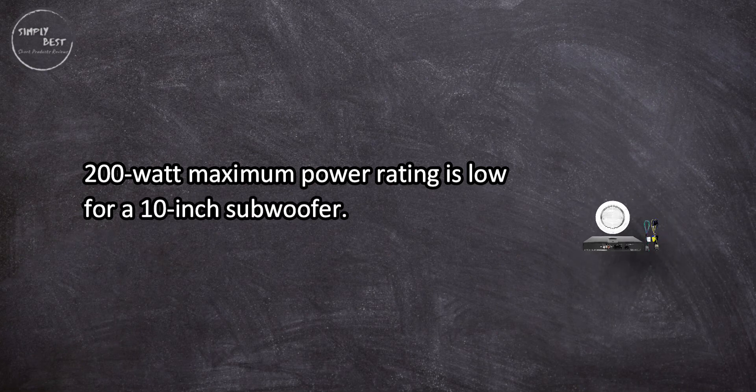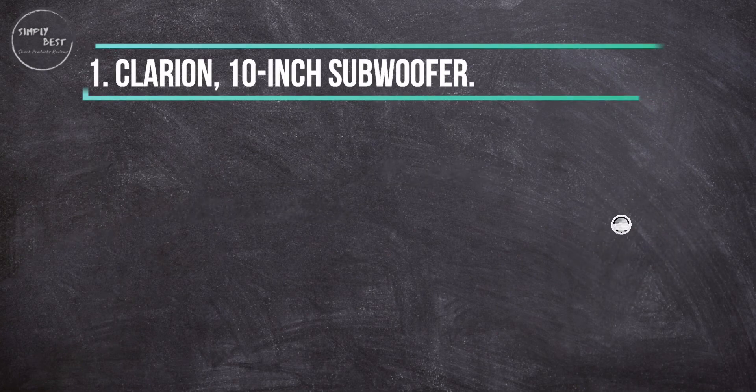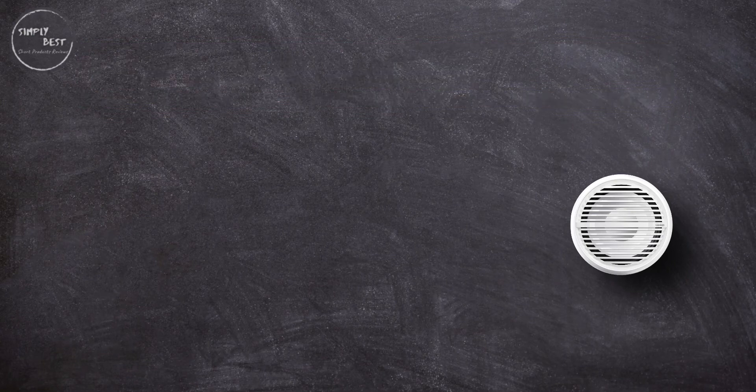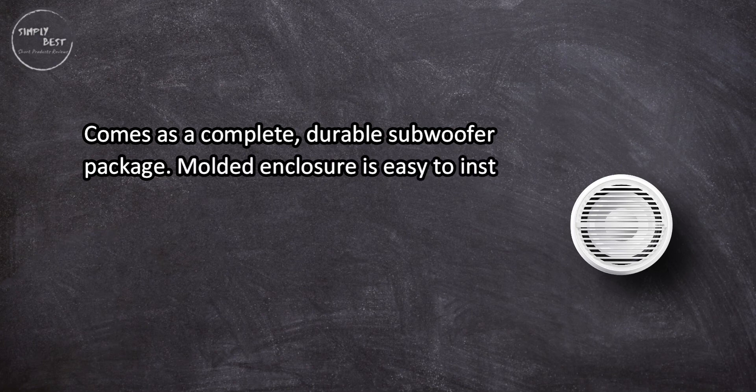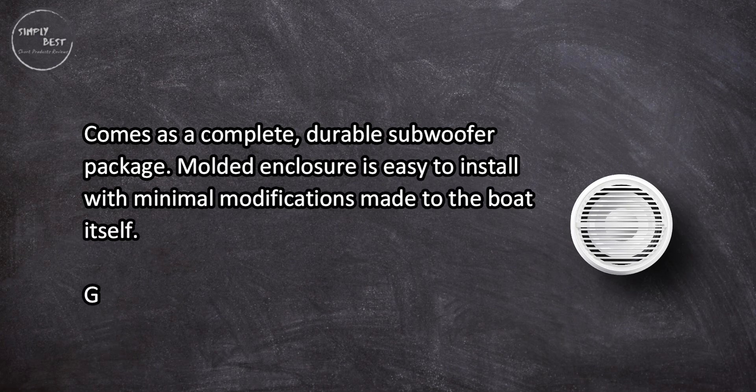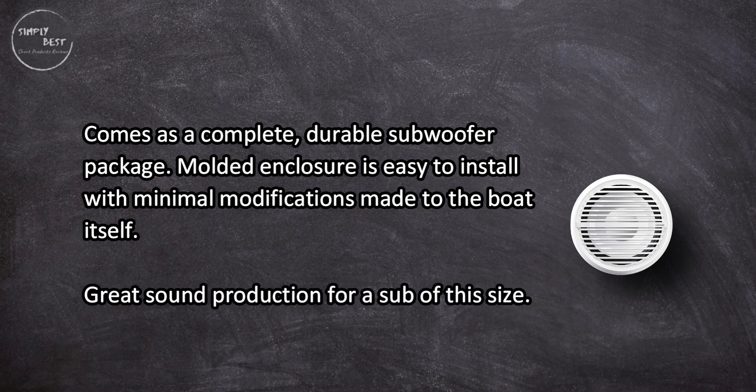At number one, Clarion 10-inch subwoofer comes as a complete durable subwoofer package. Molded enclosure is easy to install with minimal modifications made to the boat itself. Great sound production for a sub of this size.